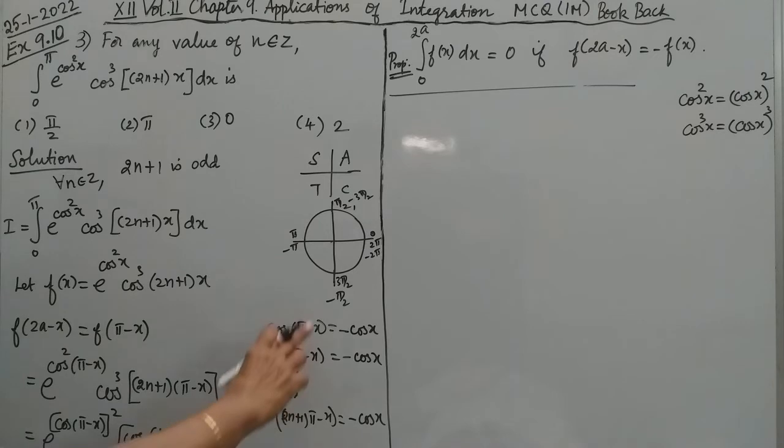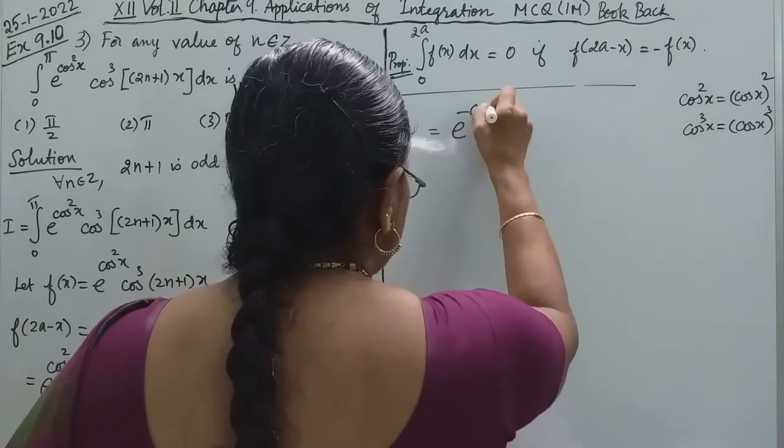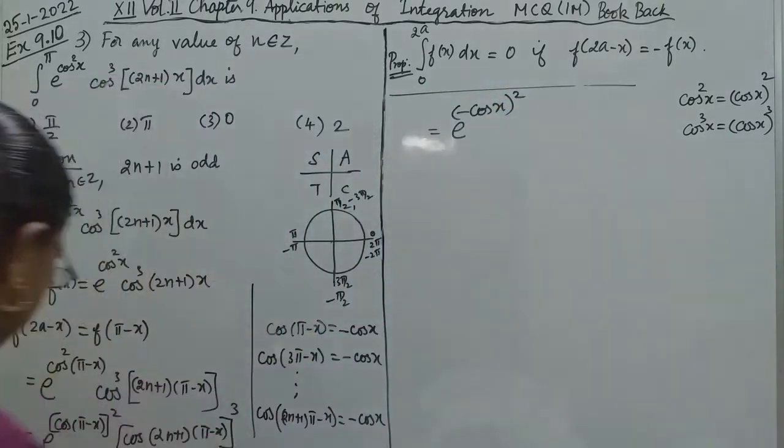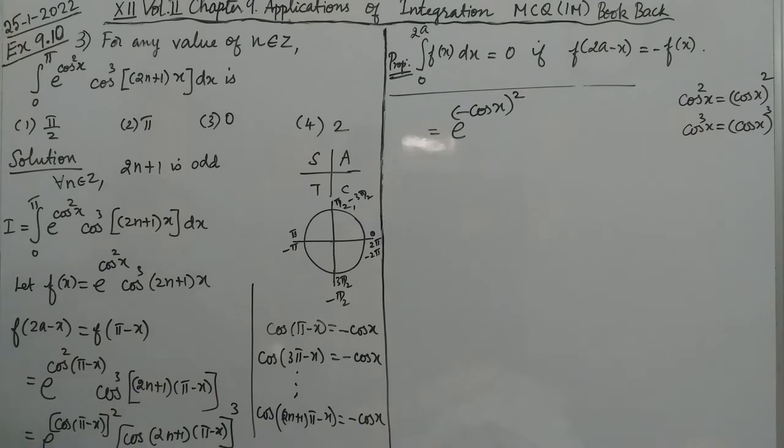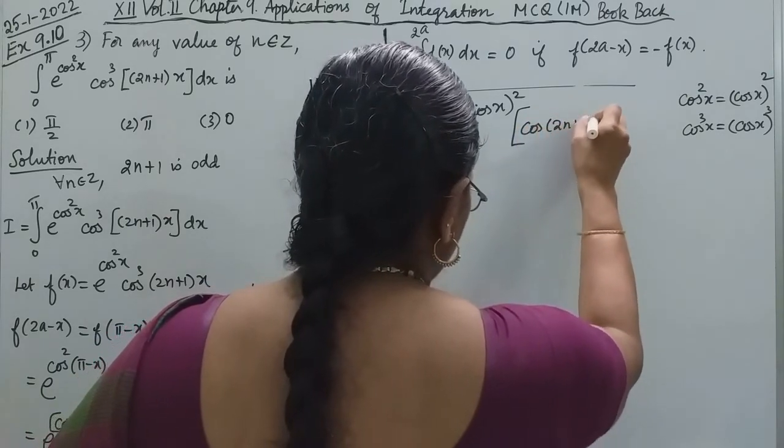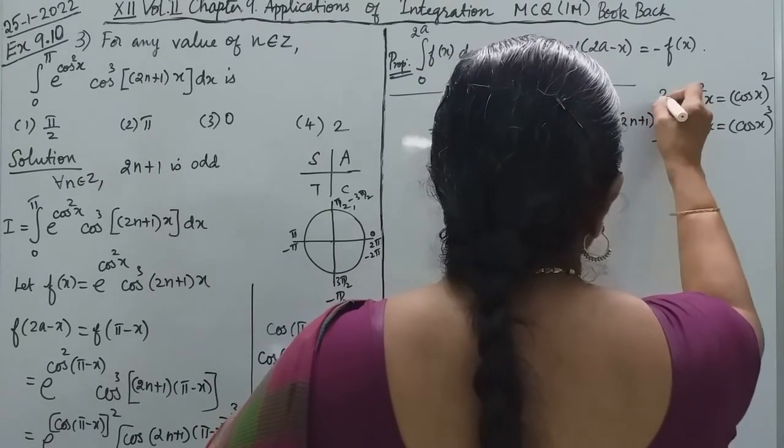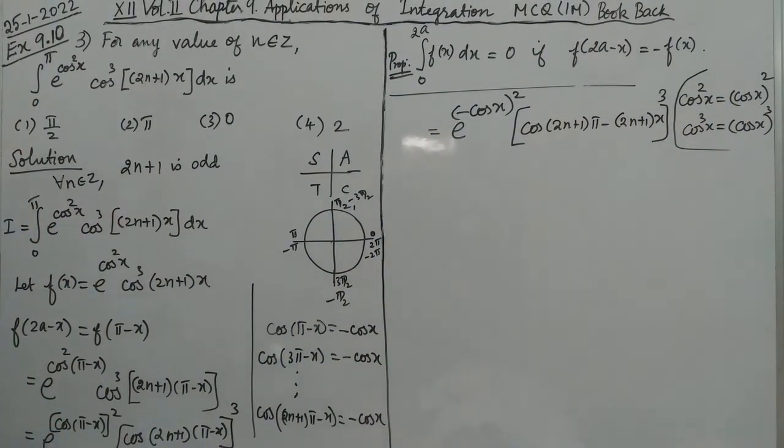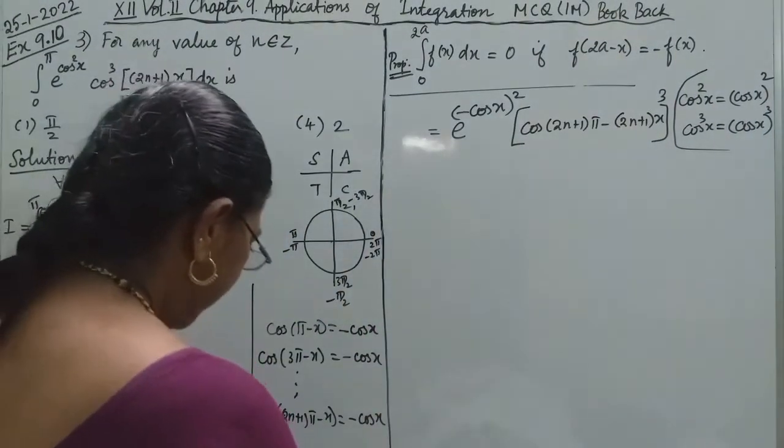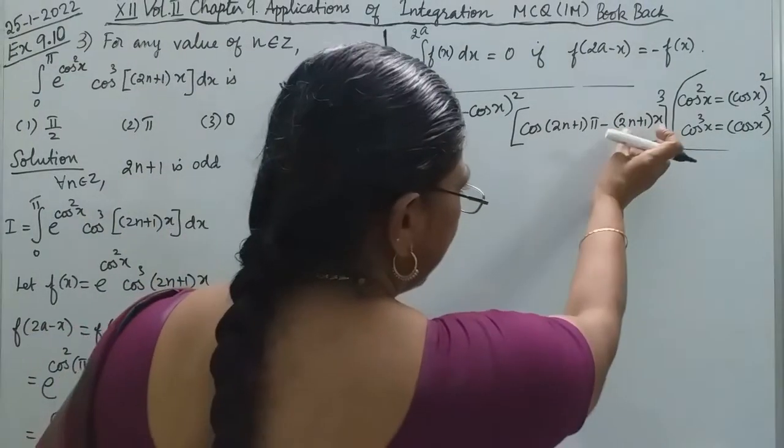Now apply the property. cos(π-x) = -cos(x). So that equals e^(-cos(x))² times [cos((2n+1)π - (2n+1)x)]³. The whole cube.